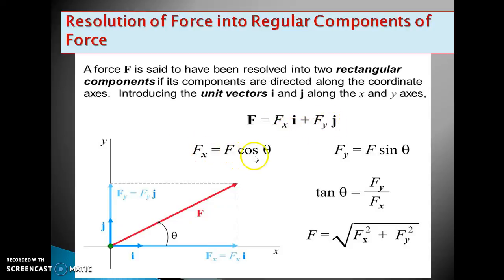Fx equals F cos theta, Fy equals F sin theta. Then tan theta equals Fy divided by Fx, and F equals the square root of Fx squared plus Fy squared.